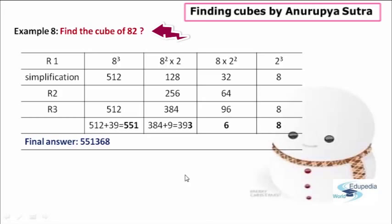If you observe the table, in the first row, first part, what I have done is I have cubed the digit in the tens place. So here, in the given example 82, we are having 8 in the tens place, and by cubing the number 8, we get 512 as the answer. That 512 we have to write in the next row called simplification.